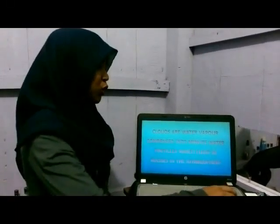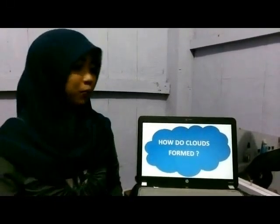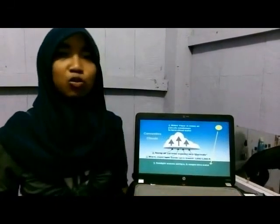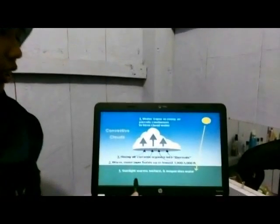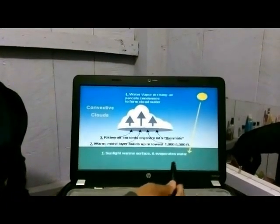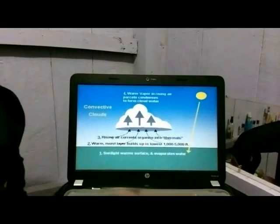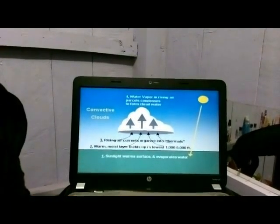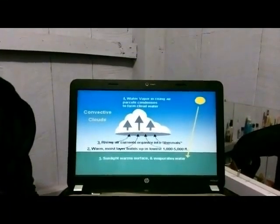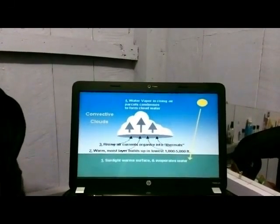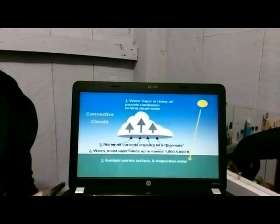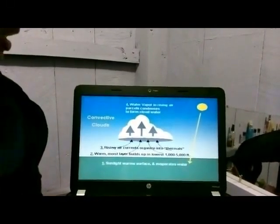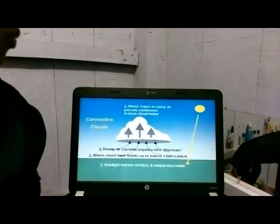Now we will move to how clouds form. Clouds form by a process named condensation. The process of condensation begins as sunlight warms the surface and evaporates the water. Then the warm, moist layer builds up in the lowest 1,000 to 5,000 feet. Rising air currents organize into thermals. Water vapor in rising air parcels condenses to form cloud water.